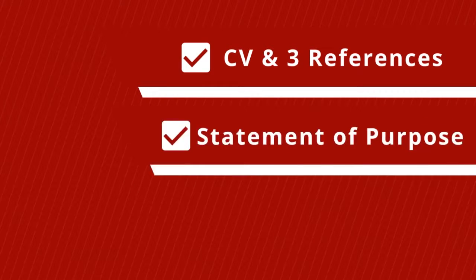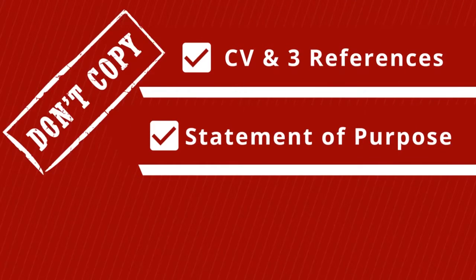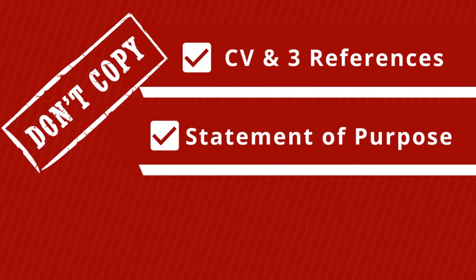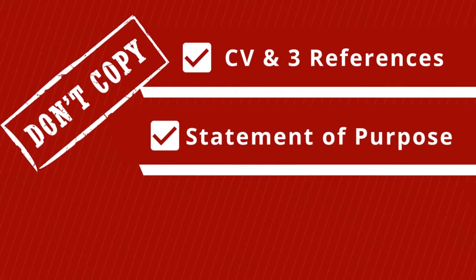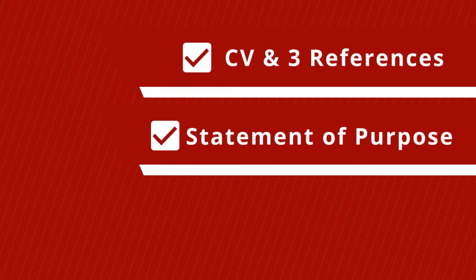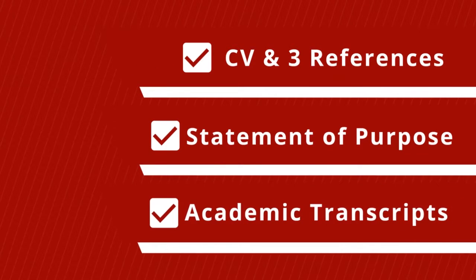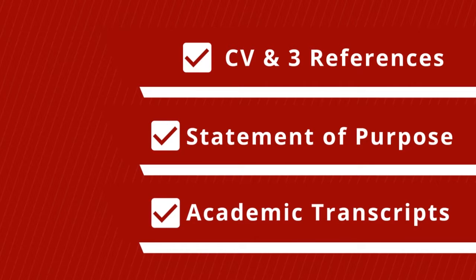Second is a statement of purpose. This enables us to understand your motivation, career aspirations, and provide a compelling case for why you are a strong candidate for this Master's program. Don't copy from somebody else — we want to hear from you, and copying will get your application rejected. The third document we'll be asking from you is your academic transcript. Make sure they're legible and complete.